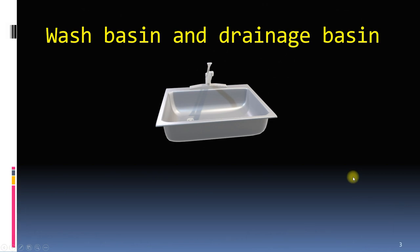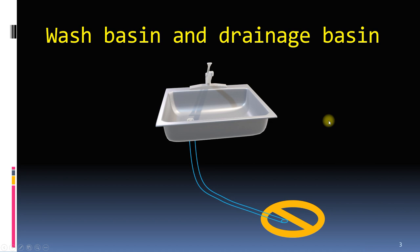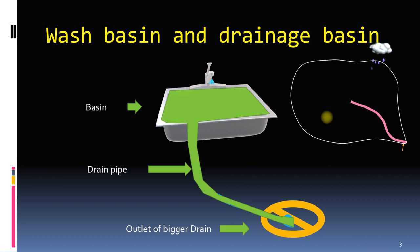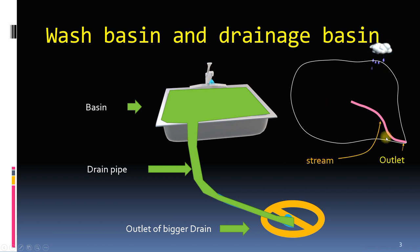To understand what is a drainage basin, first consider a wash basin. When water falls into a wash basin, it goes through a pipe into a drain. This is analogous to a drainage basin where the source of water can be rain or snow melt. The wash basin is the land area over which rain falls, the pipe represents a stream, and the outlet drain is a lake, ocean, or some river. This entire area including the stream is called a drainage basin.